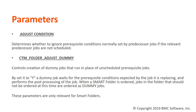The second parameter is a Control-M server system parameter called CTM_FOLDER_ADJUST_DUMMY. It controls the creation of dummy jobs that run in place of unscheduled prerequisite jobs. By setting it to Y, a dummy job waits for the prerequisite conditions expected by the job it is replacing and performs the post-processing of that job.